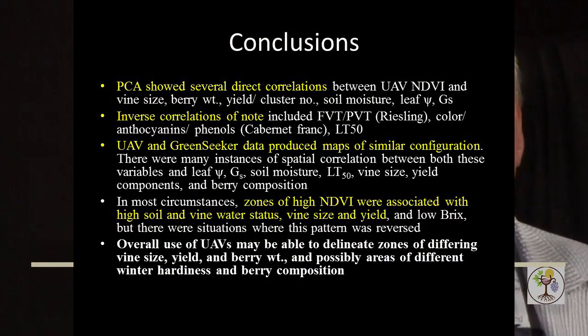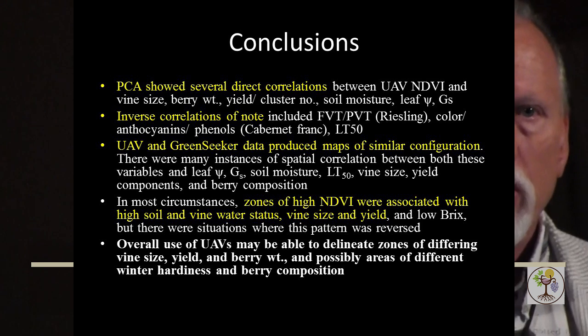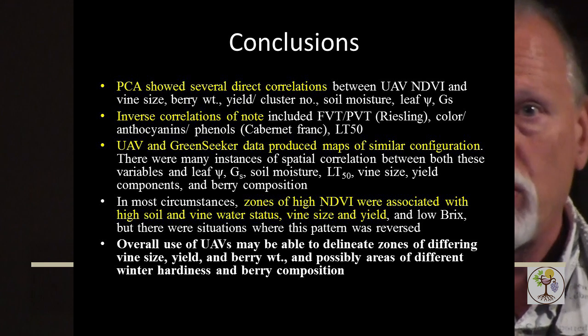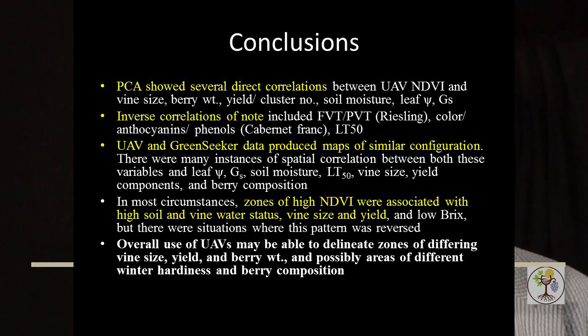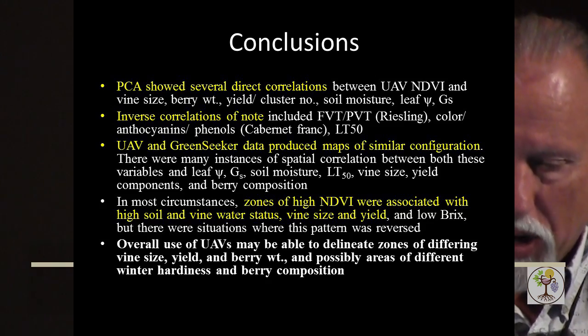So we're in the process of collecting these data now. As far as conclusions, the PCA did show us a lot of both direct and indirect relationships — mostly direct with respect to yield components, vine size, and water status — and also some inverse correlations with respect to berry composition, particularly terpenes for Riesling and phenolic analytes for Cabernet Franc. We've got two more years of this project, so we'll update you in a couple of years. Thank you very much.